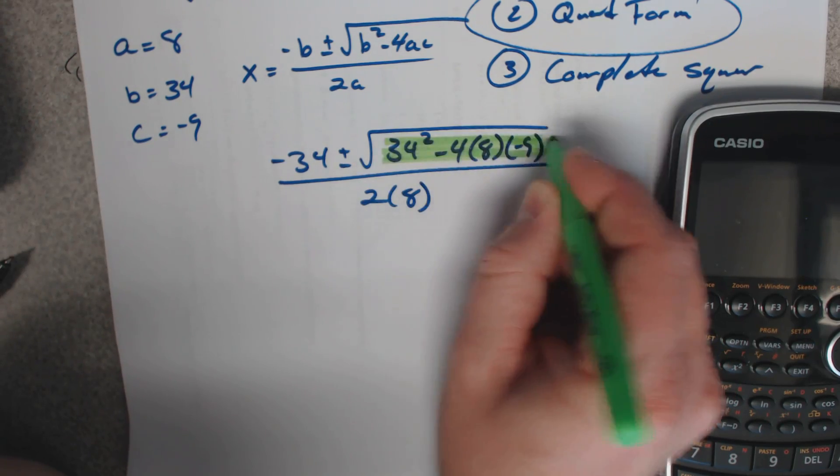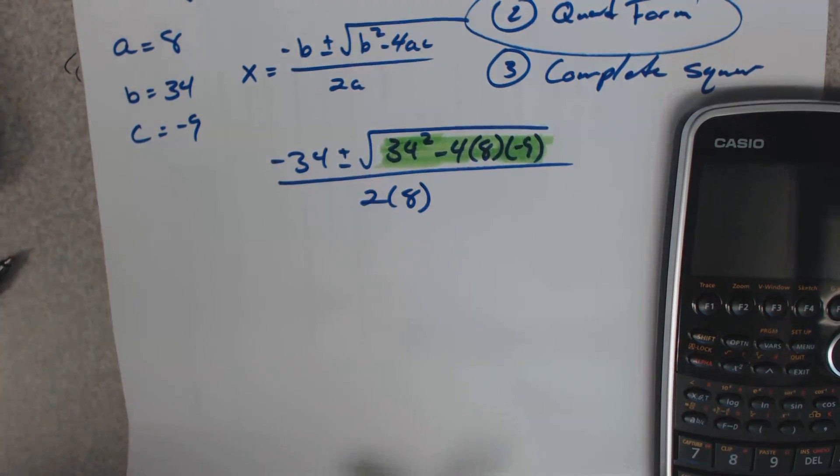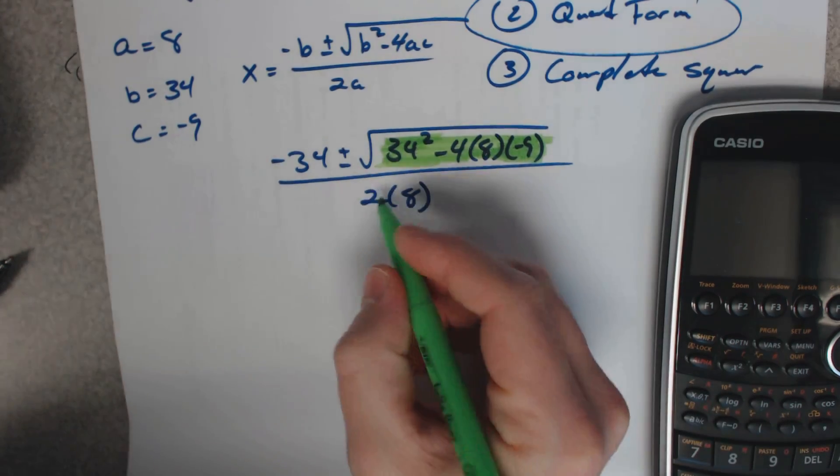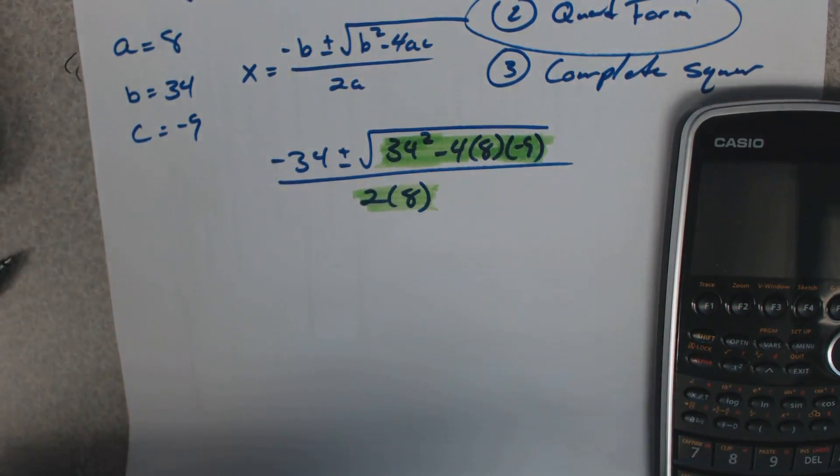So the part that I have highlighted in green, I'm going to put that in my calculator. I'm not going to put the radical in the calculator just yet. And then I'm going to clean this up here too as well. So I'm going to find this green value and this green value.